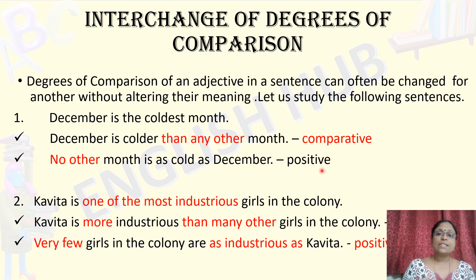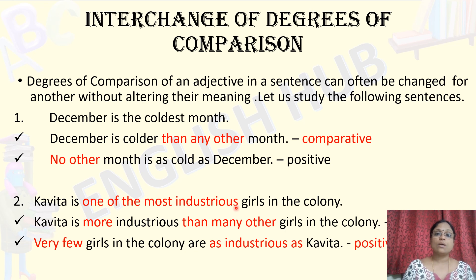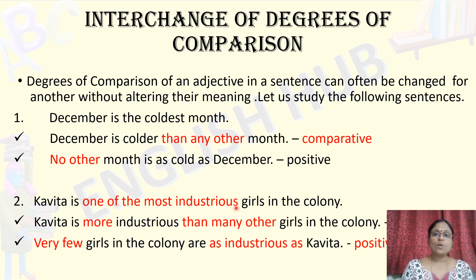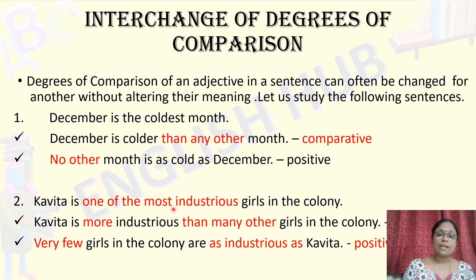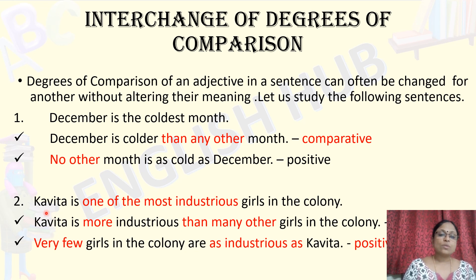The second set of examples has the first sentence in superlative degree. Here it is 'most industrious' — we cannot add -est to the word 'industrious' because it has more than two syllables. For words with more than two syllables, we cannot add the suffix -est or -er. Instead, we add 'most' for superlative and 'more' for comparative.